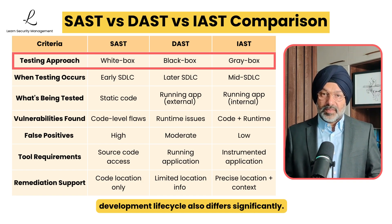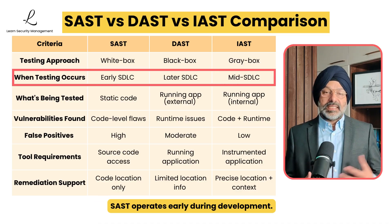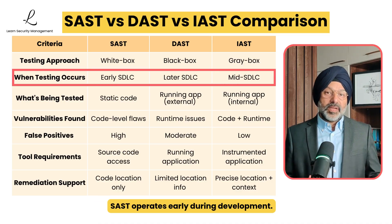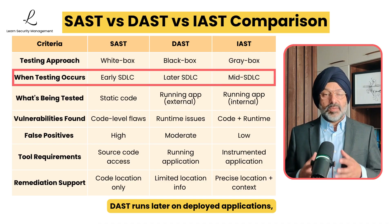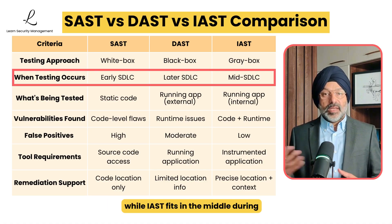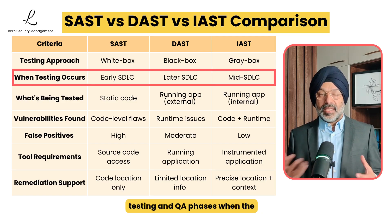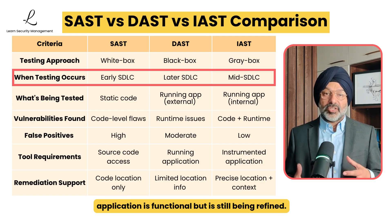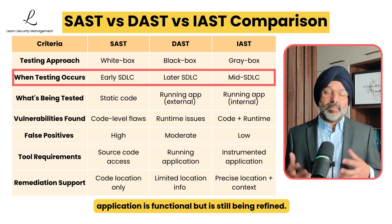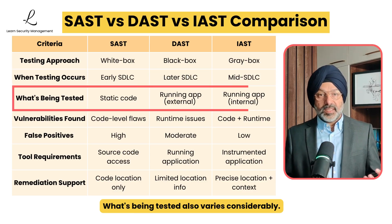The timing within the development lifecycle also differs significantly. SAST operates early during development. DAST runs later on deployed applications. While IAST fits in the middle — during testing and QA phases when the application is functional but still being refined. What's being tested also varies considerably.